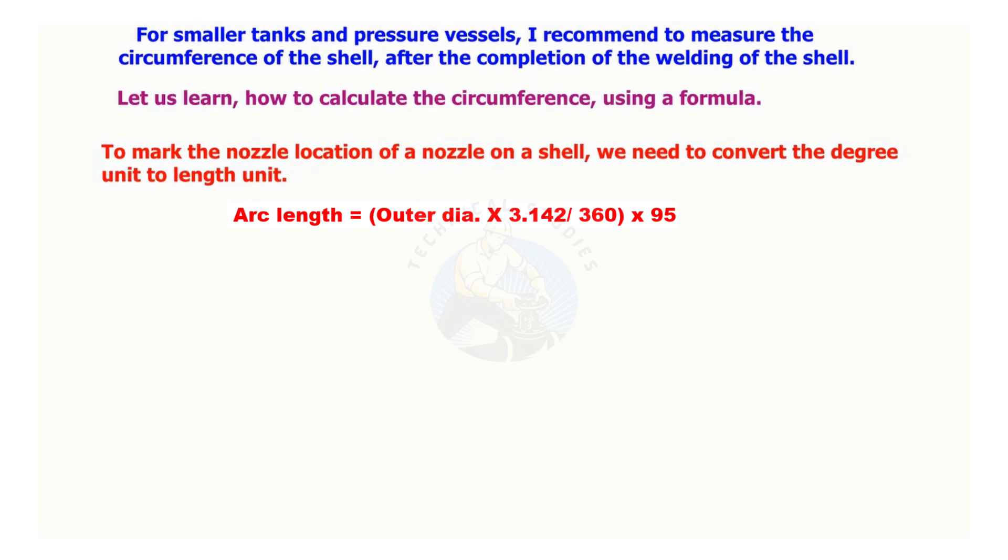The circumference of a shell is outer diameter times 3.142. Length of 1 degree is circumference divided by 360.